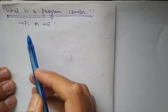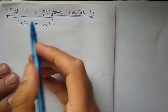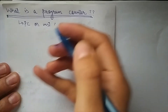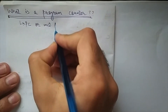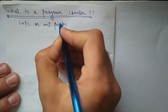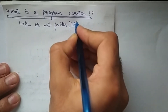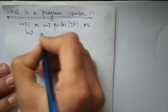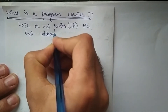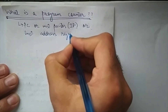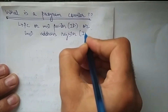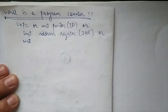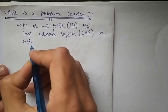What is a program counter? A program counter, or PC, is also commonly termed instruction pointer (IP), instruction address register (IAR), or instruction counter. These are all commonly used terms for the program counter.